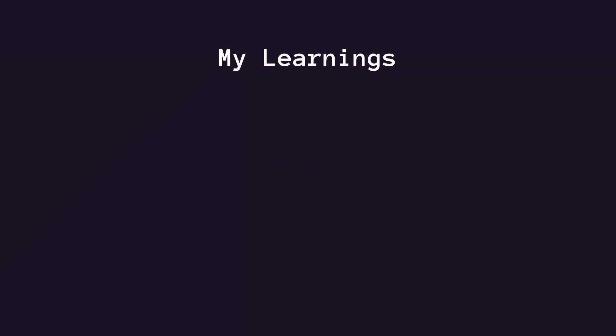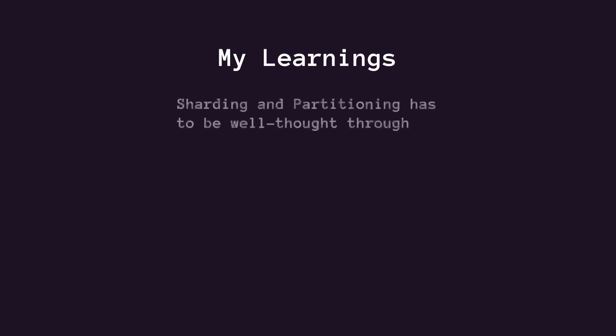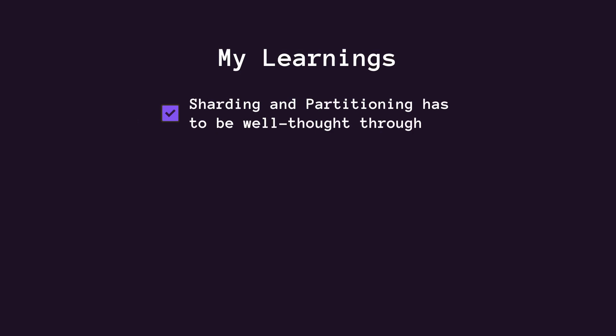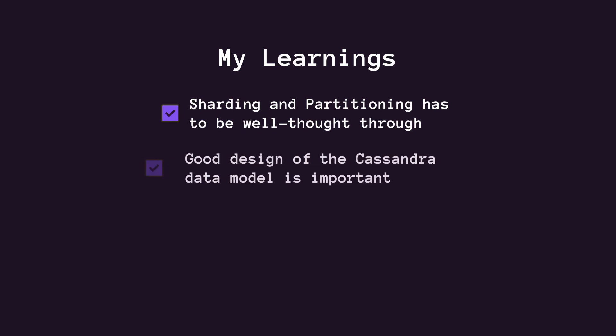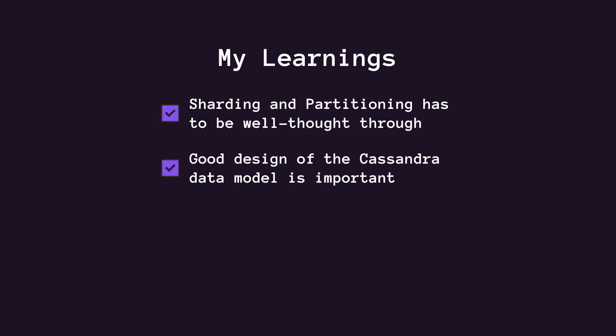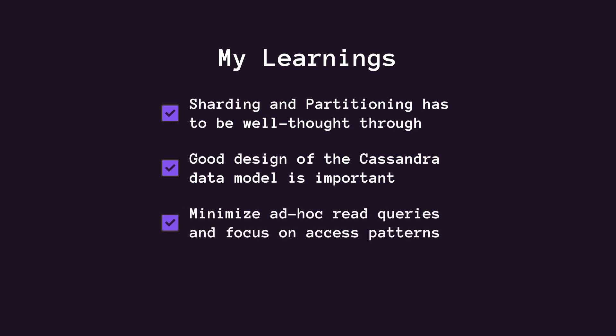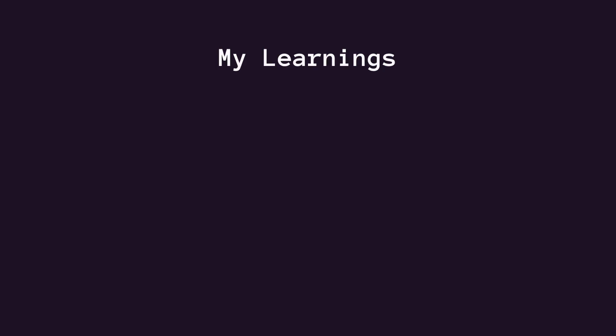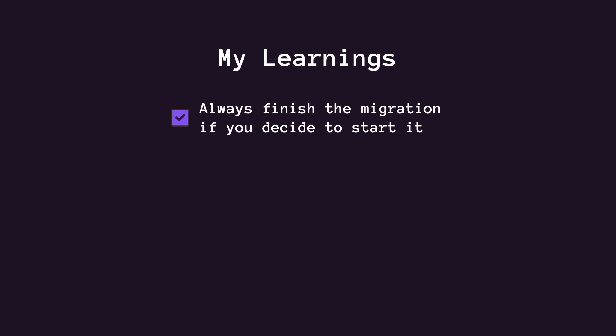Personal learnings from this journey: sharding and partitioning need to be very well thought through from early stages. Even if Cassandra is designed for large data, it's critical to carefully design the data model and optimize data access patterns — minimizing complex ad hoc read queries and focusing on denormalized data models aligned with the application's access patterns. An additional layer of load balancing or caching, as Discord did, also helps achieve higher results. And of course, migrate what you can first, but always intend to finish the migration — because if you don't plan to finish it, it's better not to start. And never forget to monitor the results.